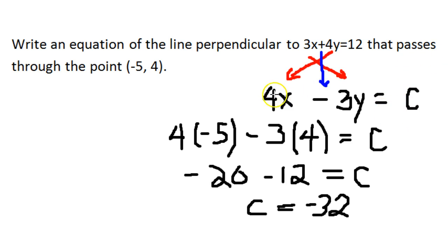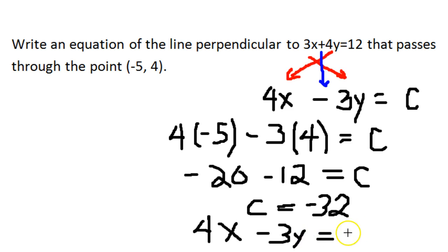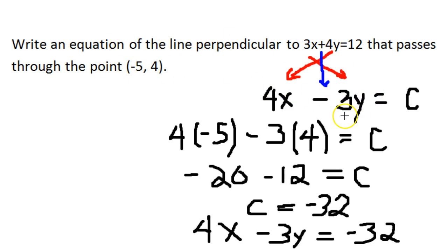And that means c is equal to negative 32. So if we put c back into this equation, then our perpendicular line equation in standard form will be 4x minus 3y is equal to negative 32. We took the coefficients of the original equation and swapped them — the coefficient of x becomes the coefficient of y, the coefficient of y becomes the coefficient of x — and we changed the sign. Then we take the coordinates of the given point, plug them in for x and y, solve for c, and write the equation of the line perpendicular to the original that passes through the point negative 5 comma 4.